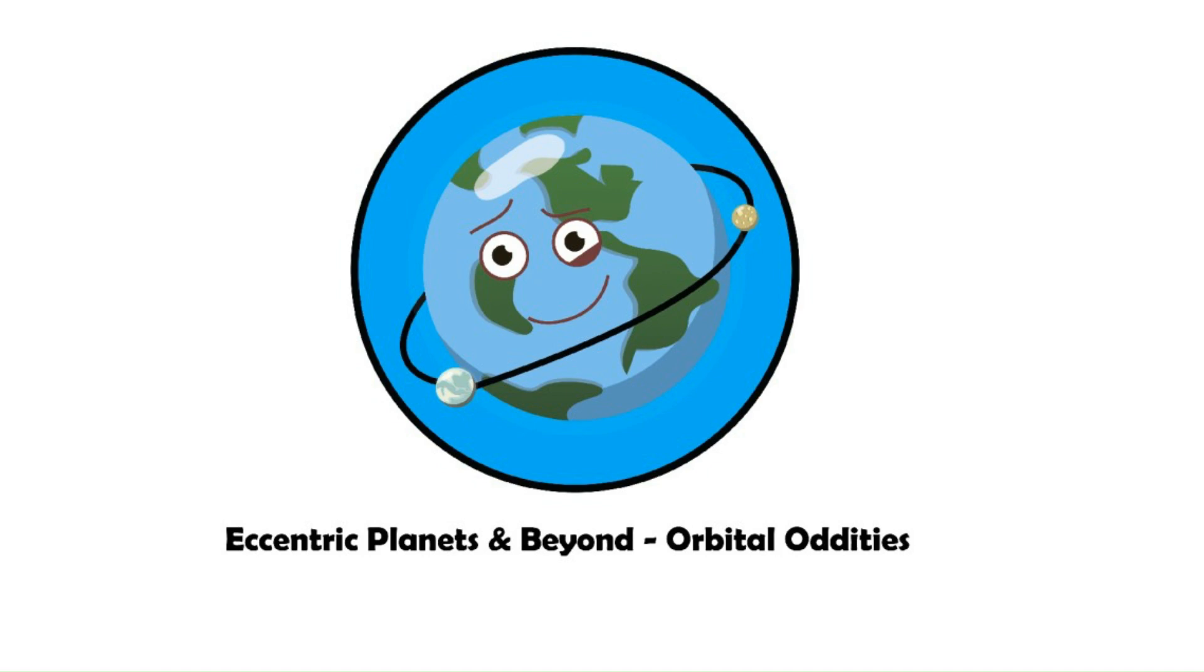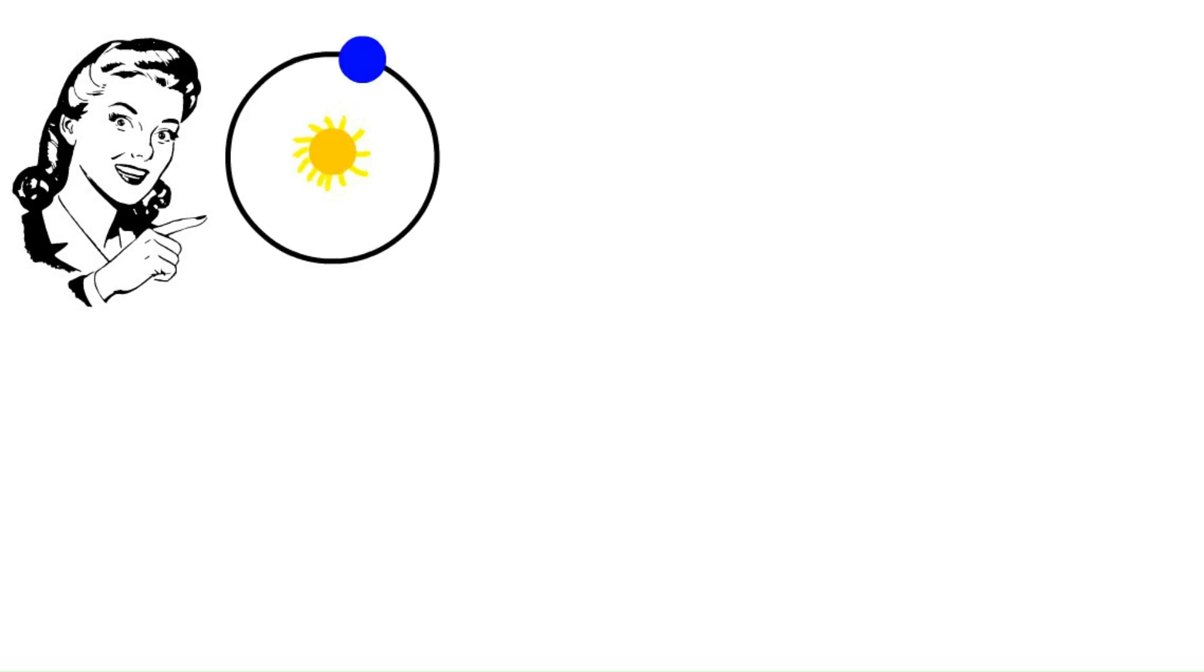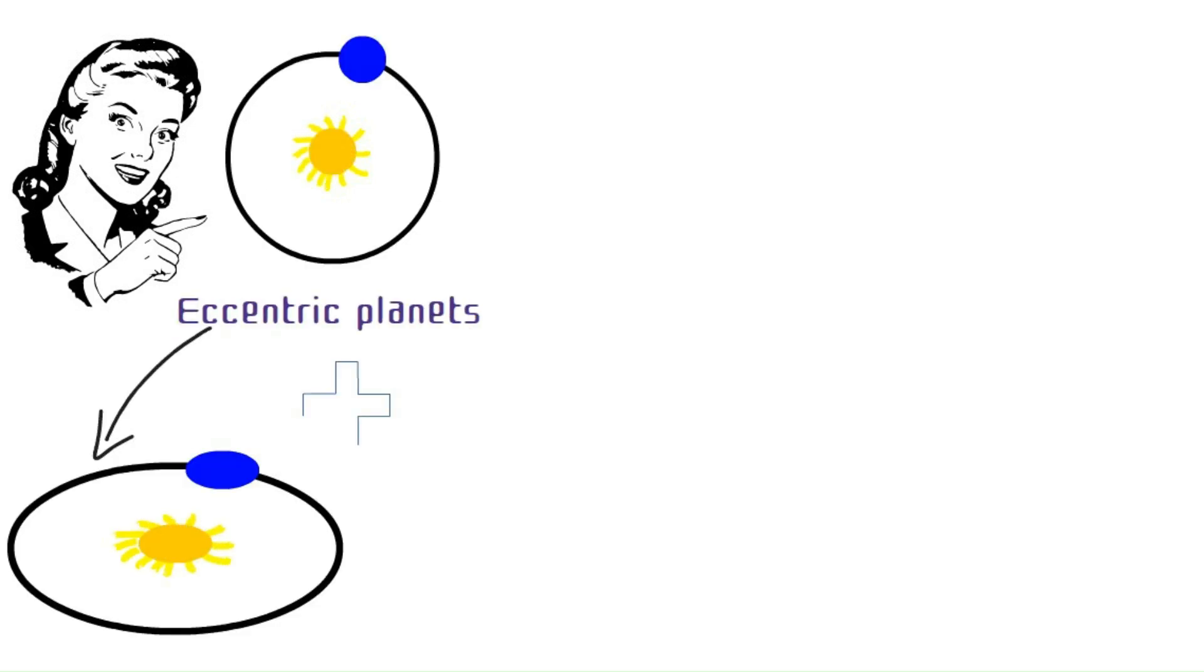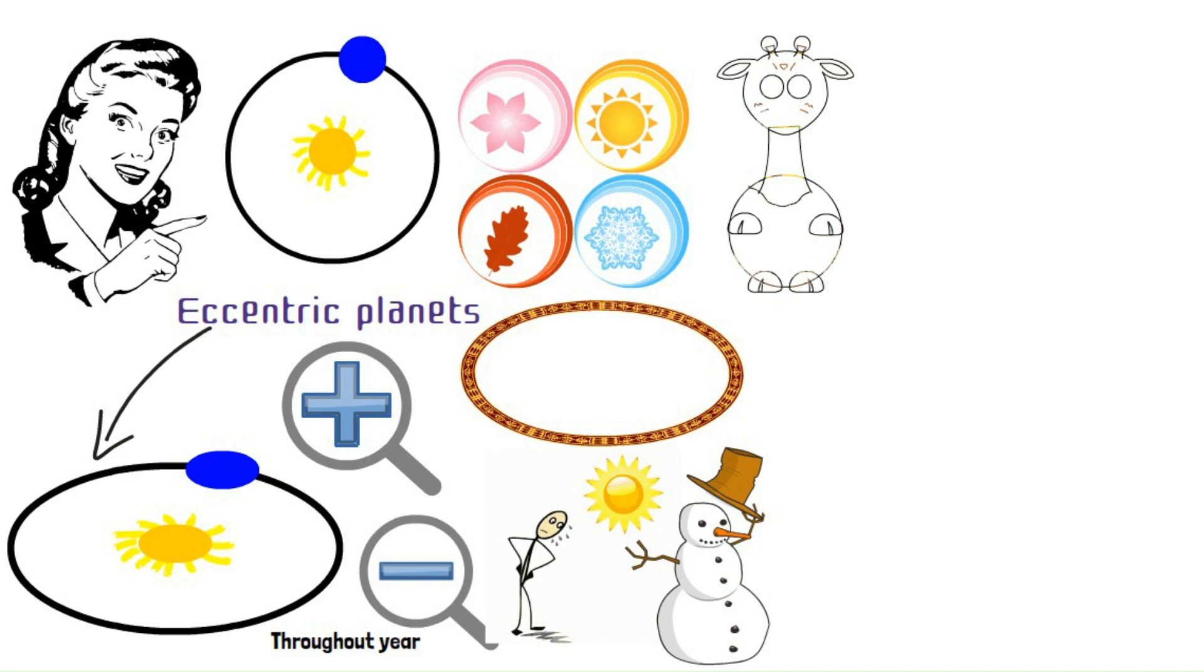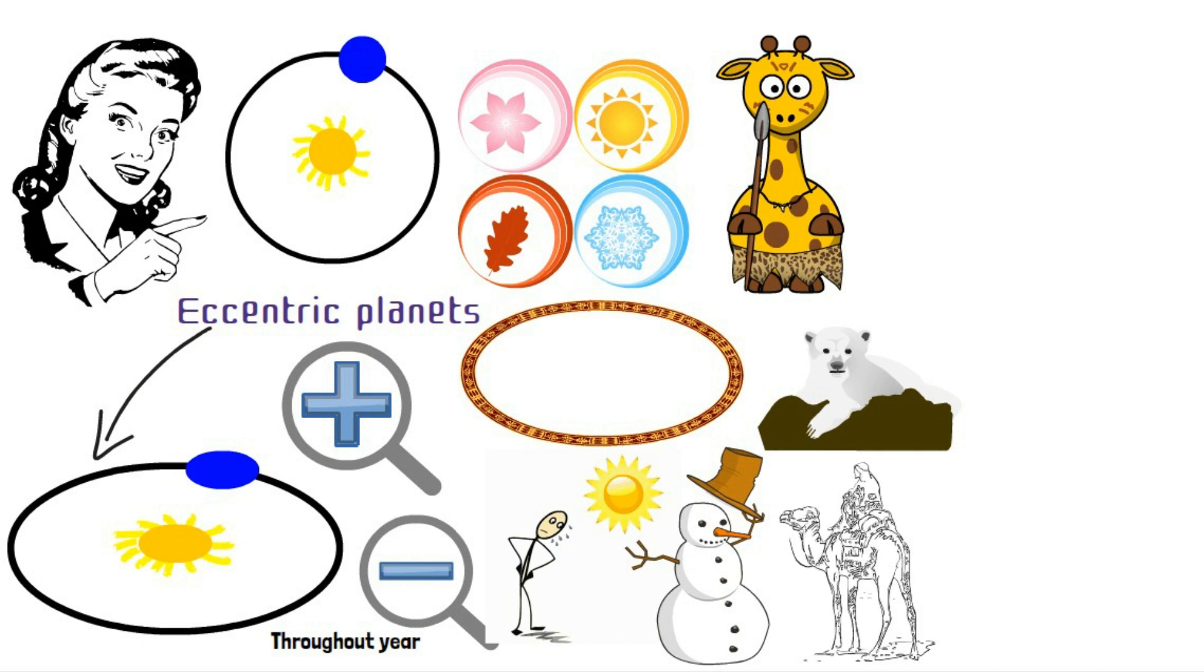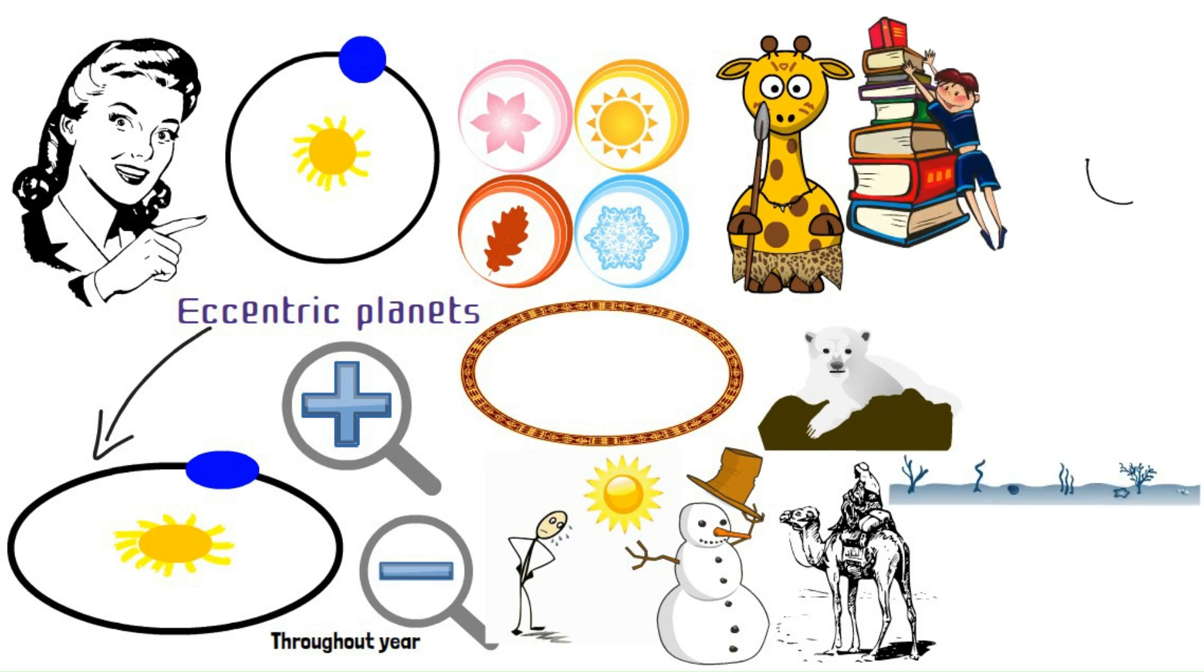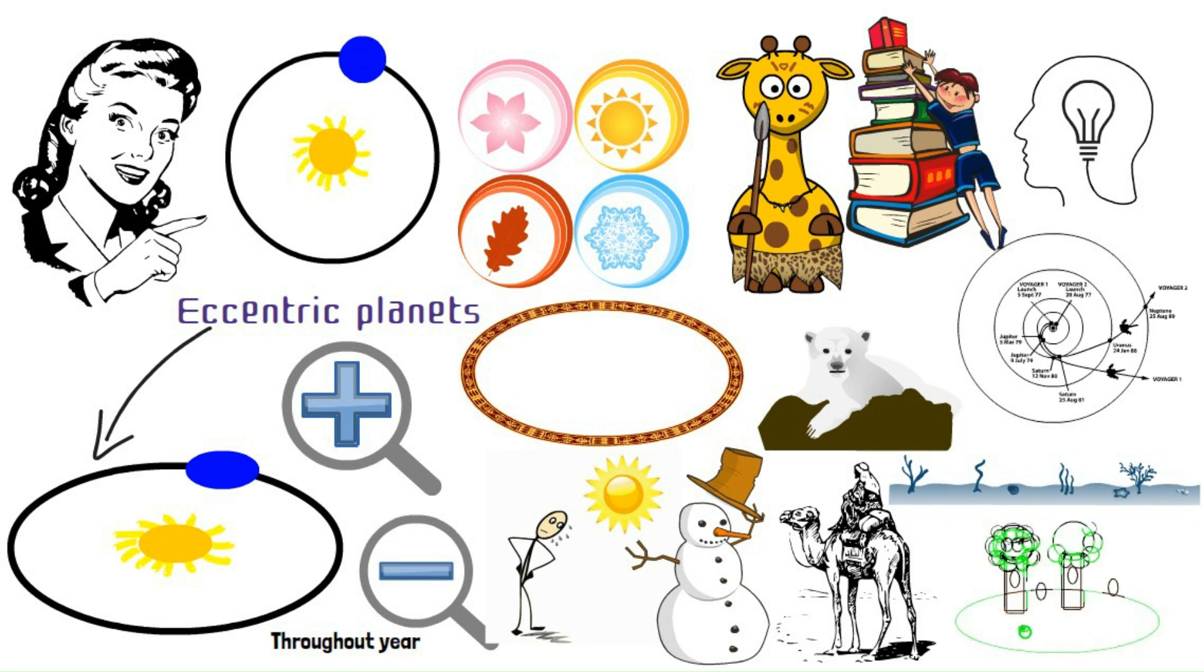Eccentric planets and beyond. Orbital oddities. Not all planets follow circular orbits. Eccentric planets have highly elliptical orbits, taking them closer and farther from their star throughout their year. Imagine an Earth that experiences scorching summers and frigid winters on steroids, all due to its wonky orbit. The extreme seasonal variations on eccentric planets could pose challenges for habitability. However, they might also create unique niches where life could potentially thrive, perhaps in subsurface oceans shielded from the harsh extremes on the surface. Studying eccentric planets can help us understand the complex orbital dynamics of planetary systems, and the potential impact of elliptical orbits on planetary environments.